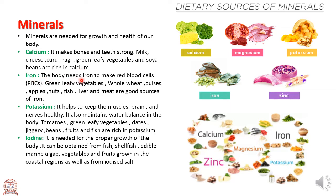Iron is needed by the body to make red blood cells. Sources of iron are green leafy vegetables, whole wheat, pulses, apples, nuts, fish, liver, and meat. Potassium helps keep the muscles, brain, and nerves healthy and maintains water balance in the body. Sources of potassium include tomatoes, green leafy vegetables, dates, jaggery, beans, fruits, and fish.